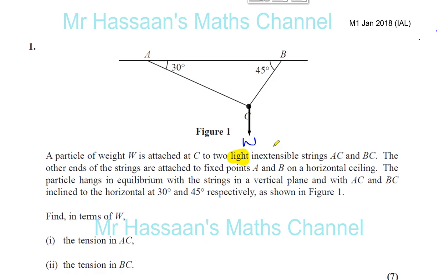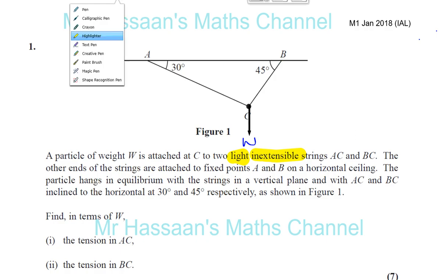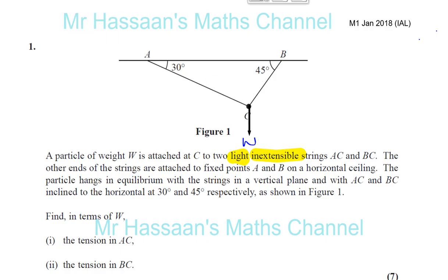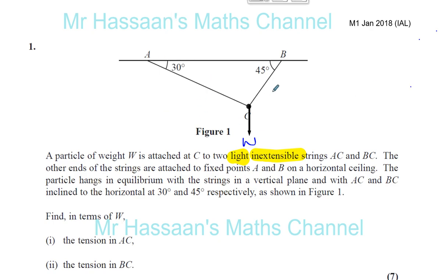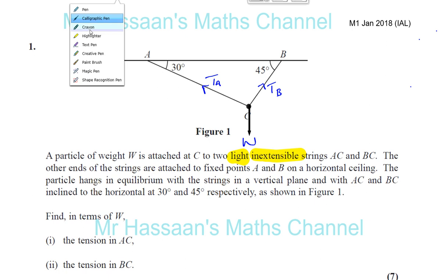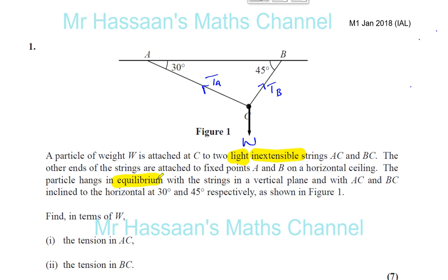Inextensible means the tension throughout the string is the same all the way through. So from A to C, the tension in that string is the same at every point, and from B to C, the tension is the same at every point. So let's now put those tensions in — the tension in string BC I'll call TB, and the tension in string AC I'll call TA.